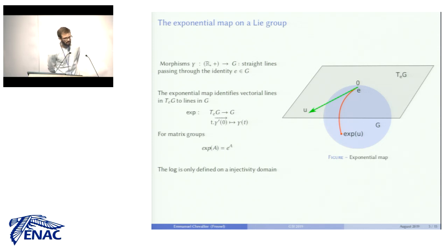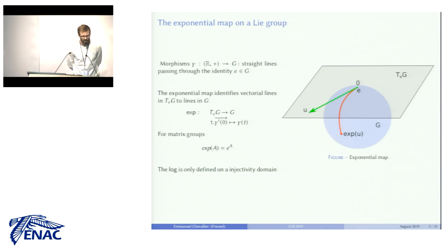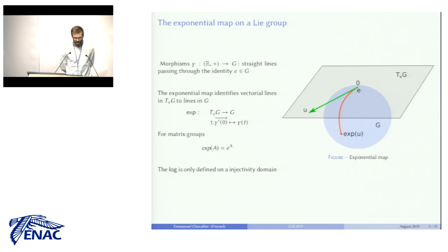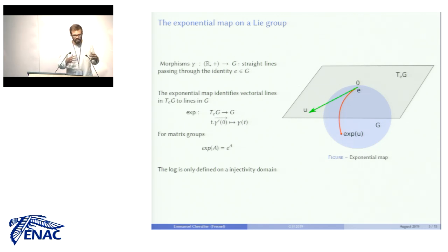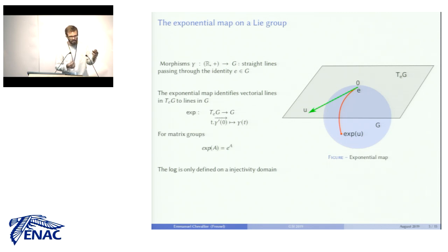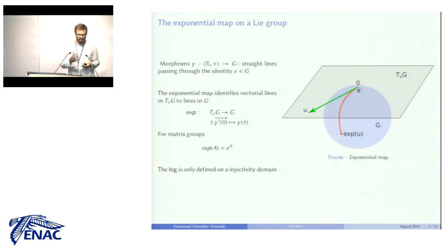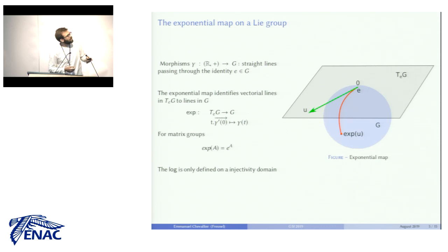The linearization at identity is performed with the exponential map. On a Lie group, we can define straight lines through identity as morphisms between R with the addition law and the group. We would like to turn these group straight lines into vectorial lines by identifying each group straight line with the vectorial line generated by its tangent vector at identity. This is what the exponential map does: it takes a tangent vector as input and maps it to the group on the corresponding straight line.